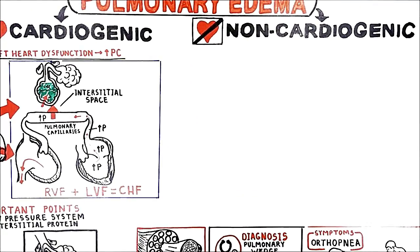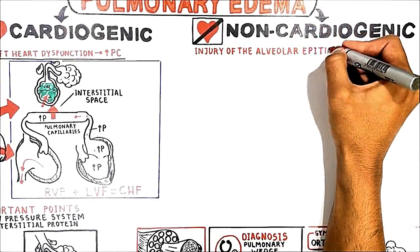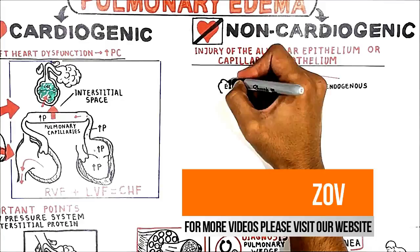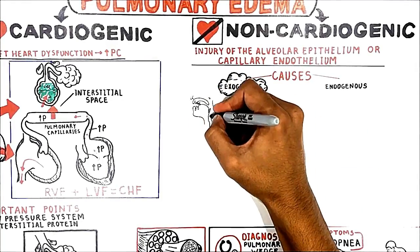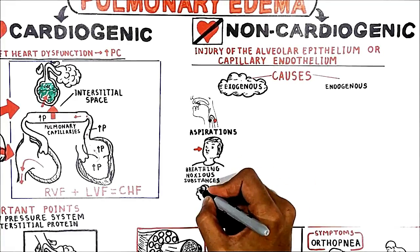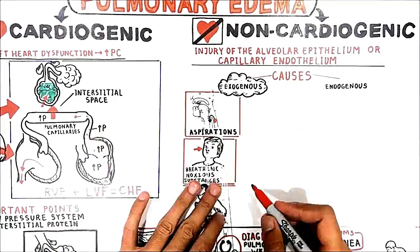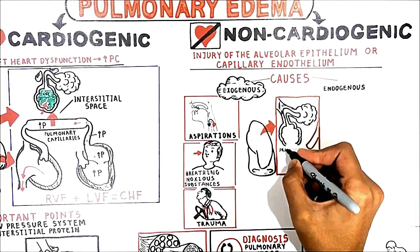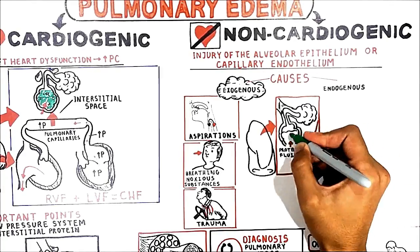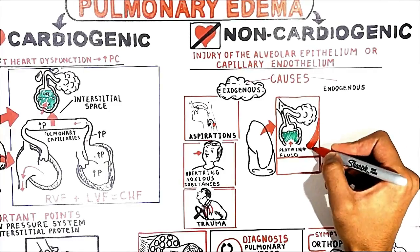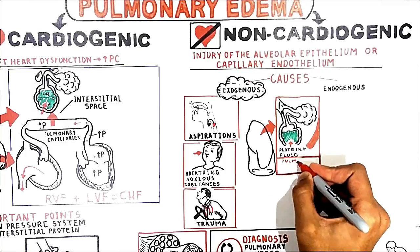Non-cardiogenic pulmonary edema occurs due to direct injury of the alveolar epithelium or primary injury to the capillary endothelium. The causes may be divided into exogenous and endogenous. Exogenous injury is due to gastric aspiration, breathing noxious substances such as chlorine gas or sulfur dioxide, and trauma. Each of these causes direct injury to the alveolar epithelium and rapid leakage of both interstitial proteins and fluid into the alveoli. The rapid leakage of protein deactivates surfactant. When blood flow to the alveoli is normal but there is no ventilation due to alveoli filled with fluid, it is called a pulmonary shunt.